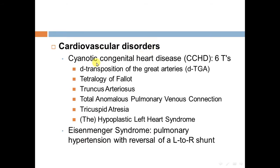Cardiovascular disorders include cyanotic congenital heart disease, remembered by the six T's: D-transposition of the great arteries, tetralogy of Fallot, truncus arteriosus, total anomalous pulmonary venous connection, tricuspid atresia, and hypoplastic left heart syndrome. Also Eisenmenger syndrome — pulmonary hypertension with reversal of left-to-right shunt.